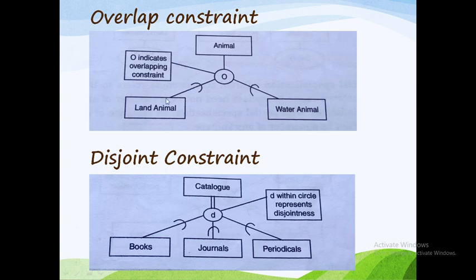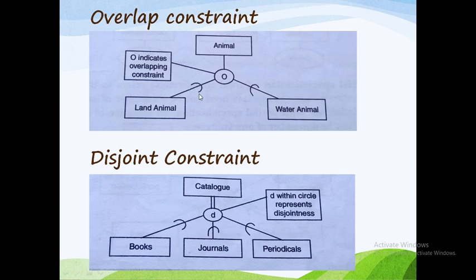An entity may be a member of more than one subclass — this is overlap. Lion is only a land animal, not a water animal. But if we consider the crocodile, it is both a land animal and a water animal. So crocodile is considered a member of both subtypes — that is overlap constraint.